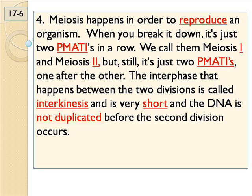We call them meiosis one and meiosis two, so it should be like PMAT one and PMAT two — two PMATs in a row. They're called meiosis one and meiosis two, but still it's only two divisions: prophase, metaphase, anaphase, telophase, and then you're done.